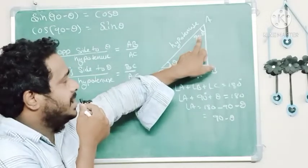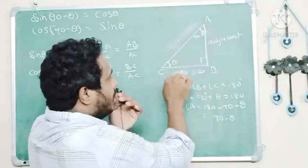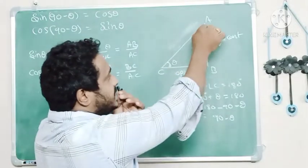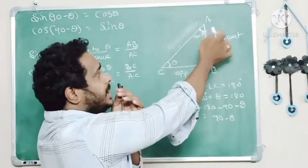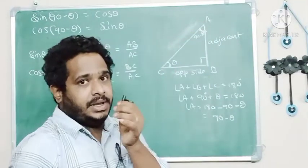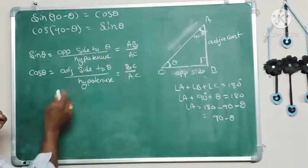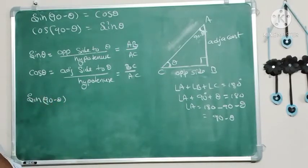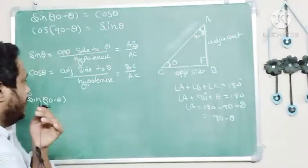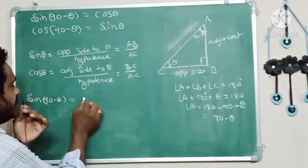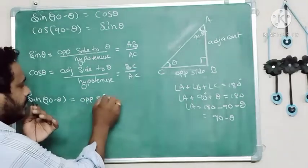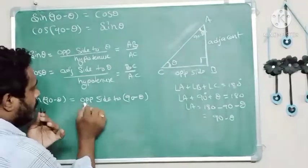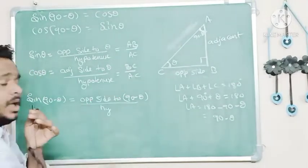So 90 minus theta is also an acute angle. The side opposite to angle (90 minus theta) is BC, and the side adjacent to (90 minus theta) is AB. Now from the triangle, take the sine(90 minus theta) ratio: sin(90 minus theta) equals opposite side over hypotenuse, which is BC over AC.